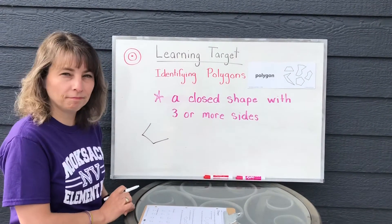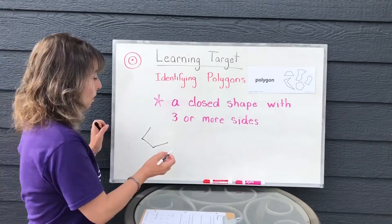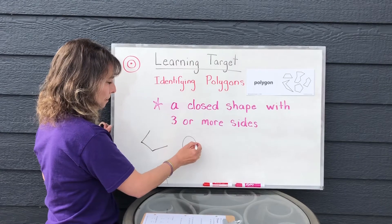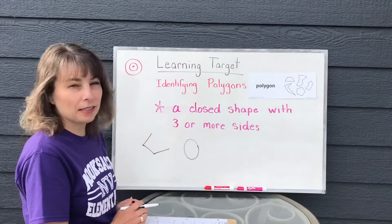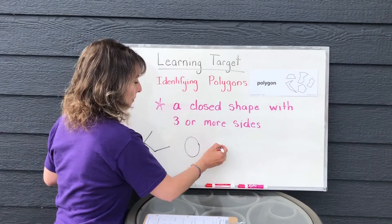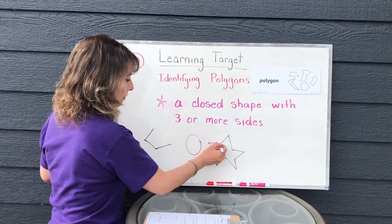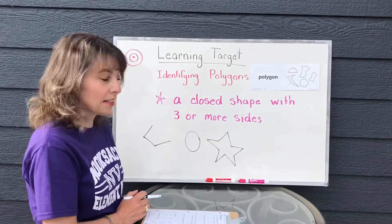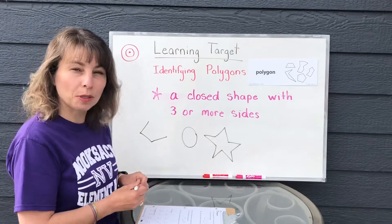So — no, because it's not closed. Or what about this one? That one's closed but it doesn't have any sides. What about this one? Is that a polygon? It is, because it's closed and it has three or more sides.